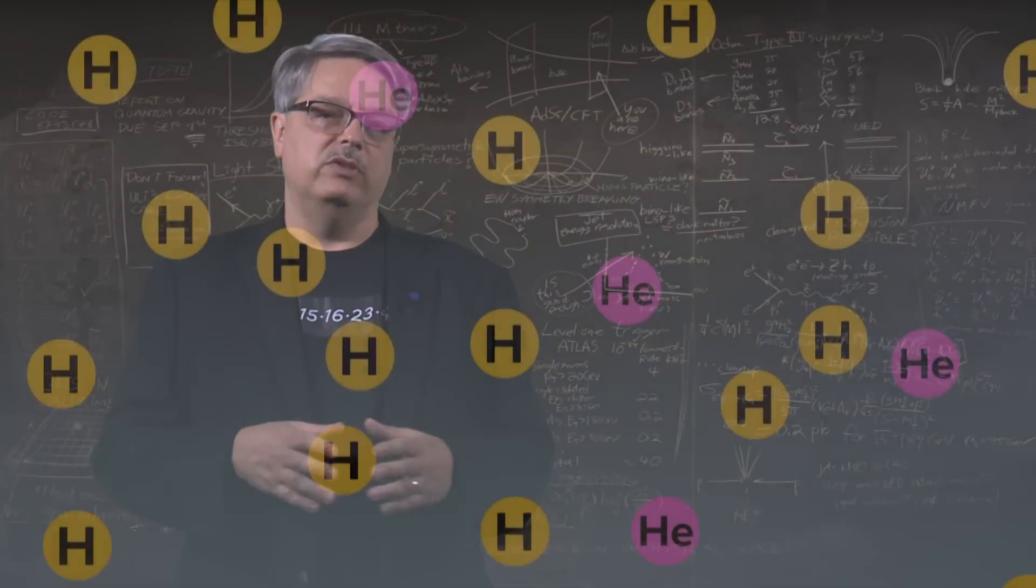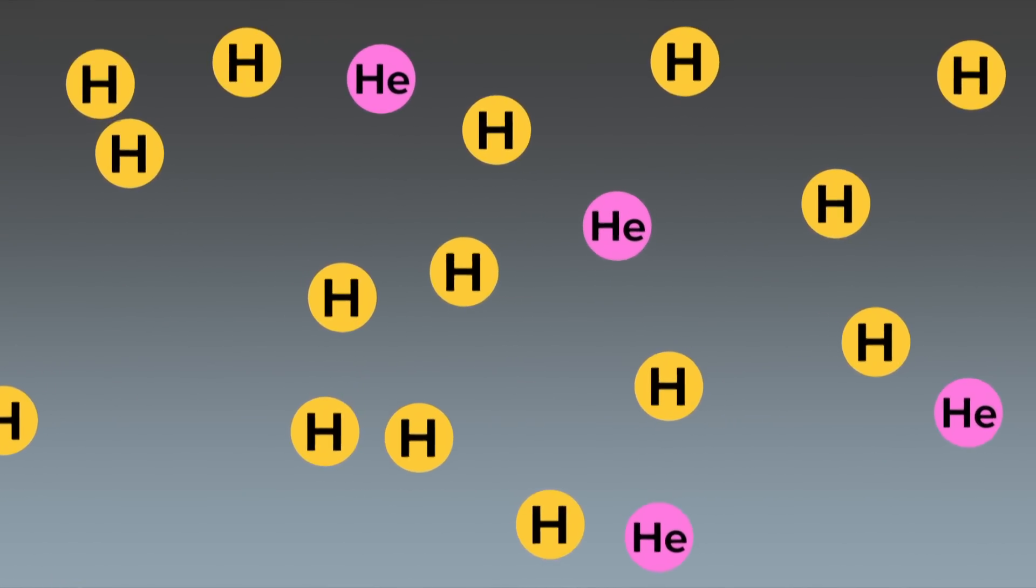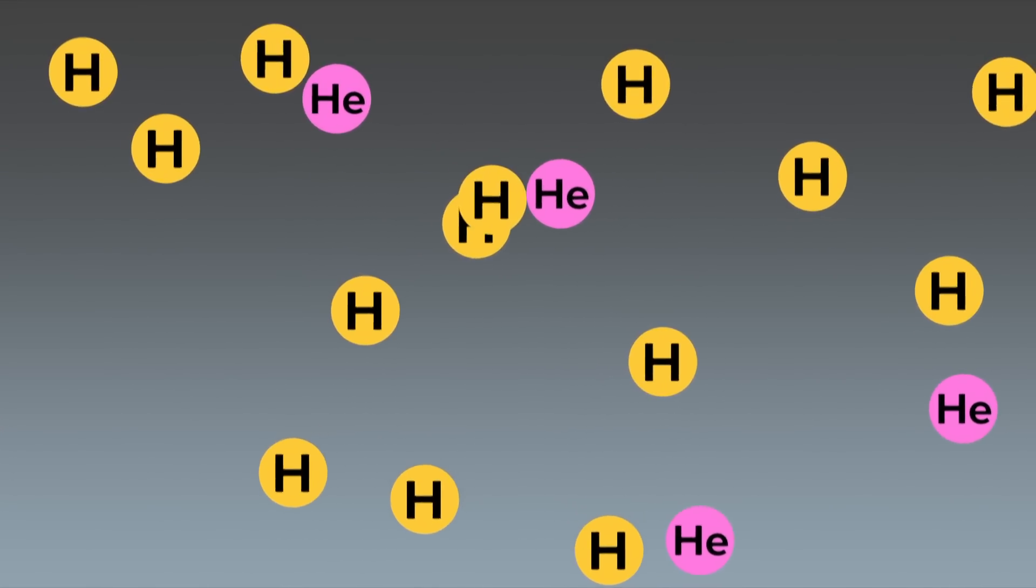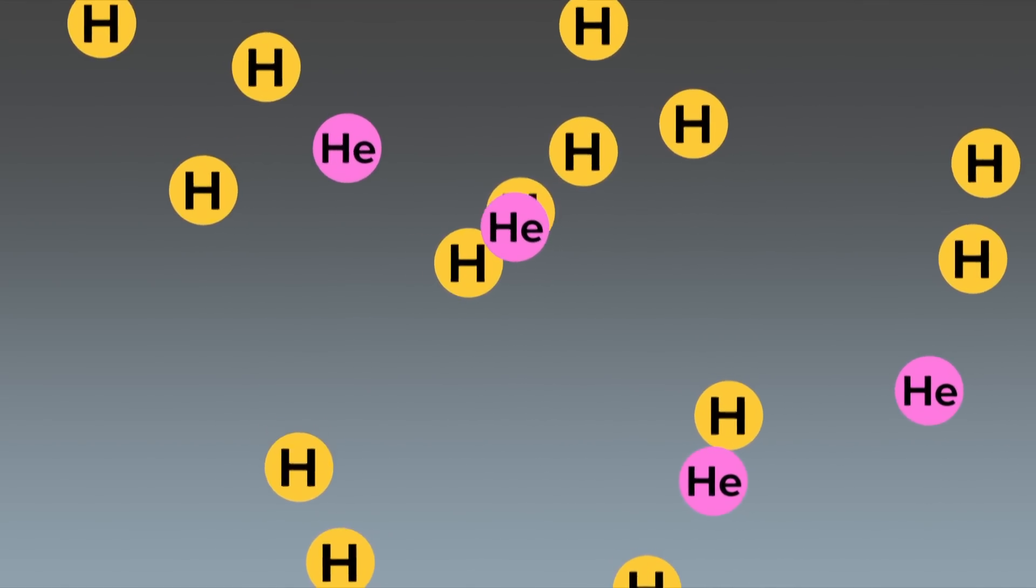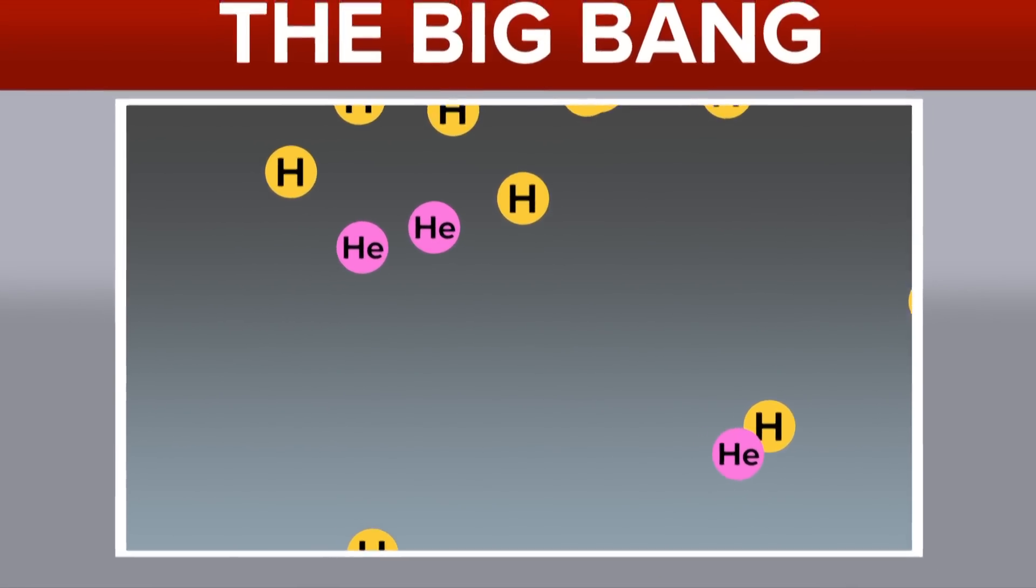To understand this, you need to know a few things. First, when the universe was young, it consisted entirely of the nuclei of hydrogen and helium atoms. Hydrogen is an atom with one proton, and helium contains two protons and two neutrons. They were created in the unbelievably short time of three minutes after the Big Bang.